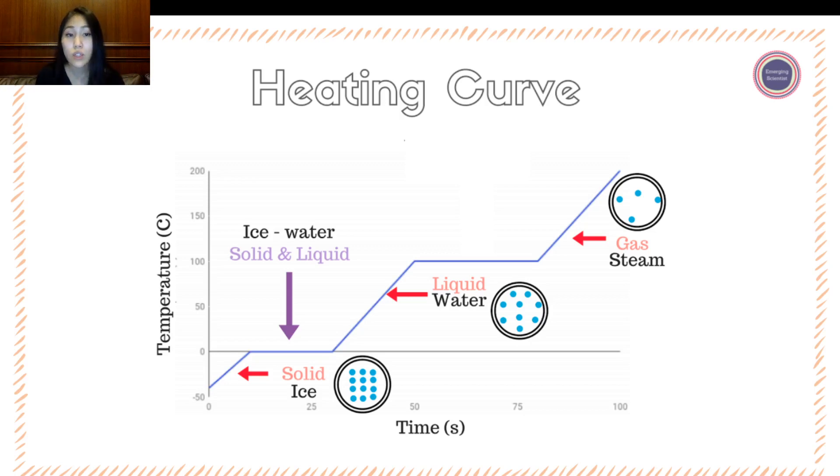We can also consider the phase diagram in this sense, where going from a solid to a liquid state is melting, and going from a liquid to a gaseous state is evaporation. So this heating curve is able to combine everything that you've just learned into a visual representation.